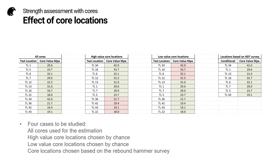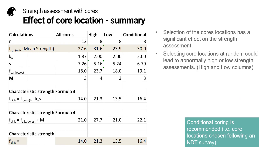As we have 12 core locations available and only eight are required for the assessment, we can illustrate what may go wrong if conditional coring is not used. It would be possible purely by chance to choose the eight highest core locations, and it would also be possible to choose the eight lowest core locations. So in total, we have four cases to study. The calculations clearly show that the selection of core locations has a significant effect on the strength assessment. Selecting core locations at random can lead to abnormally high or low strength assessments. In all cases, conditional coring is recommended.